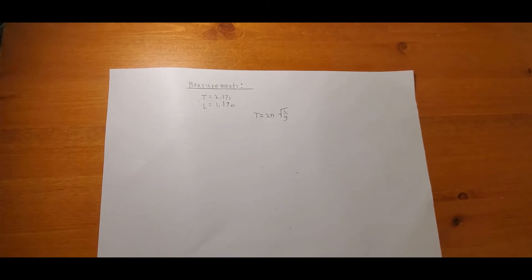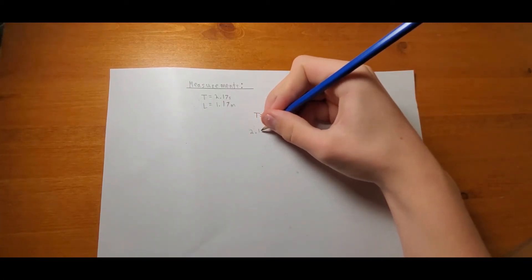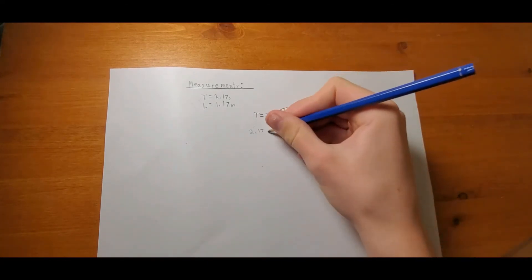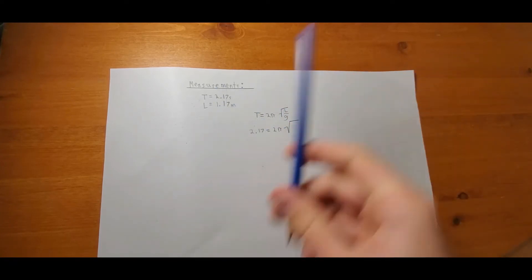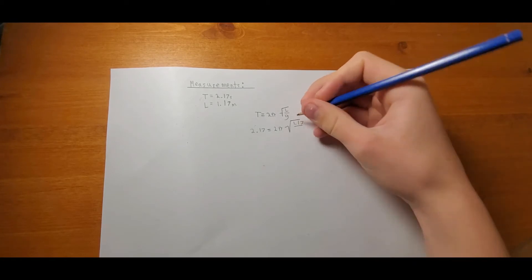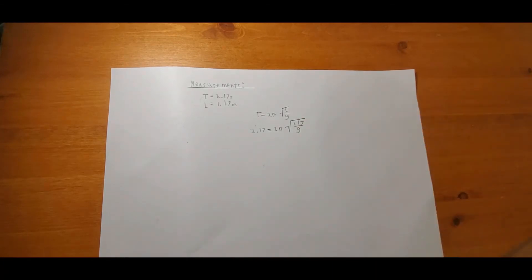Now, first things first, we are going to substitute an equation back in. In the equation, we need to substitute these two values. So that will be 2.17 is equal to 2 pi times the square root of the length, 1.17, over g. And we don't know what g is yet. That's what we're trying to find.